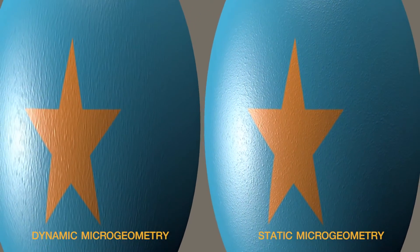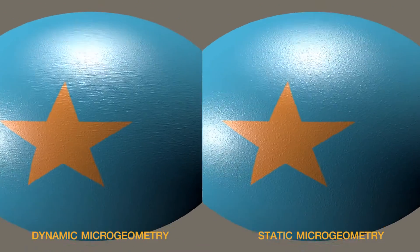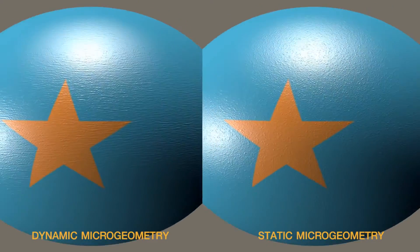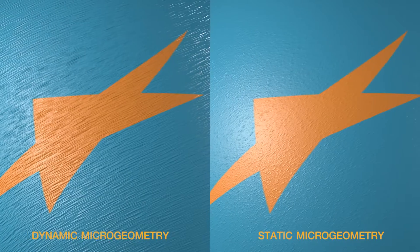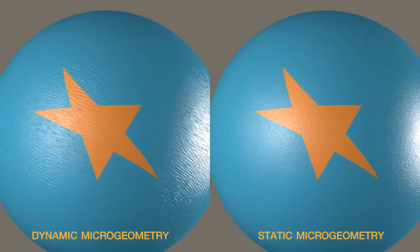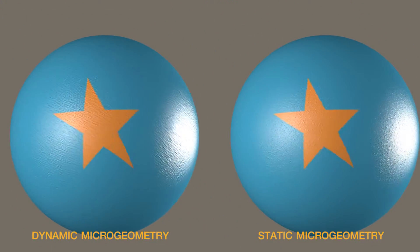When squashed and stretched, its microstructure develops anisotropic texture. The dynamic microstructure gives a stronger sense of surface strain, especially in this twisting example.